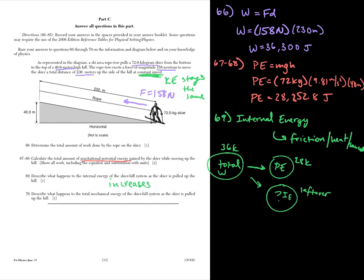Number 70. What happens to the total mechanical energy? So that's kinetic energy and potential energy. Since the person's going up the hill, potential energy clearly increases. So if that increases, what about kinetic energy? Kinetic energy is constant. So overall, this increases.